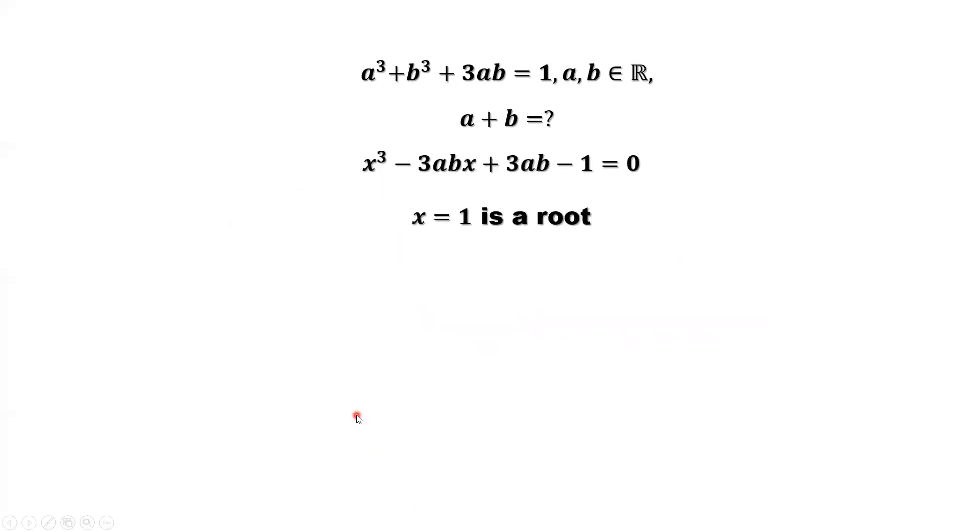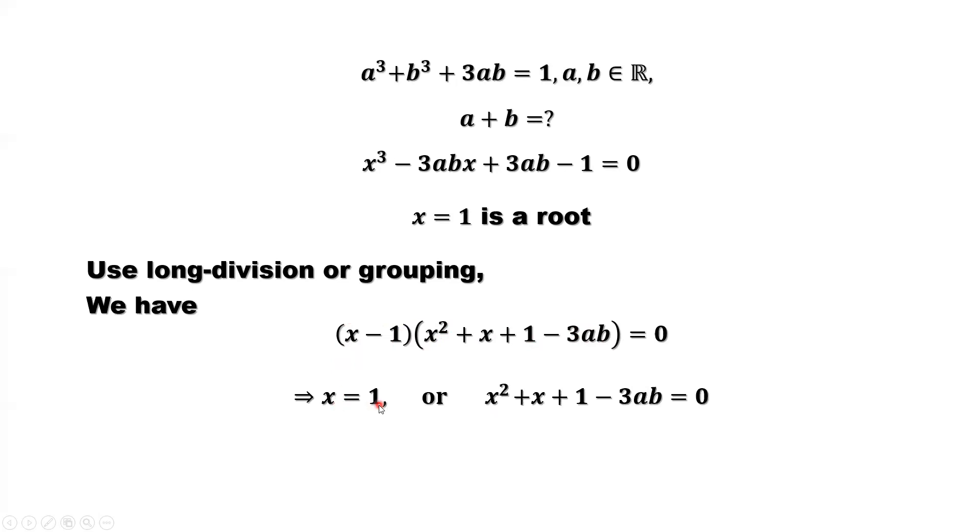Now, we can use long division or grouping to factor this. To factor this polynomial, if we want to use long division or grouping, you have to know the root. Otherwise, you cannot do long division or grouping. If you do long division or grouping, it is easy to find this part can be factored as (x - 1)(x² + x + 1 - 3ab) = 0. The product of 2 equal to 0, that means the first factor equals 0, or the second factor equals 0. If the first factor equals 0, we imply x equals 1.